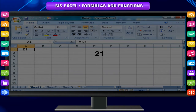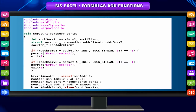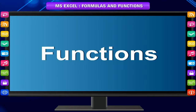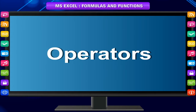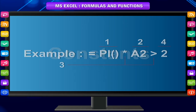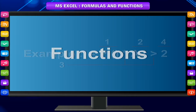The calculated value is stored in the cell having the formula. Parts of a formula: A formula can also contain these elements: 1. Functions, 2. References, 3. Operators, 4. Constants. In the above example, we are using all of these elements.